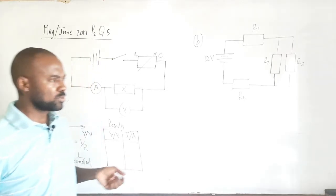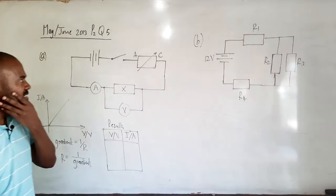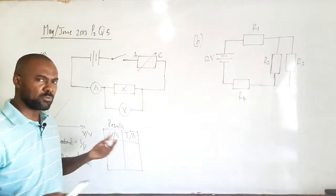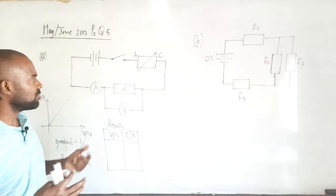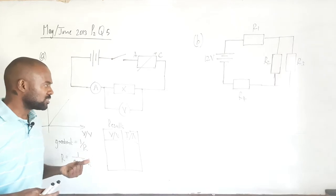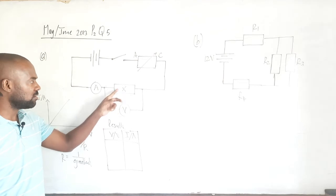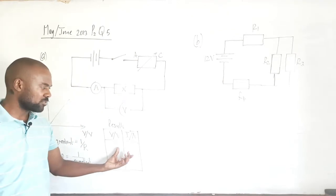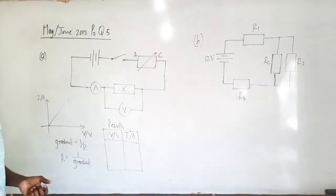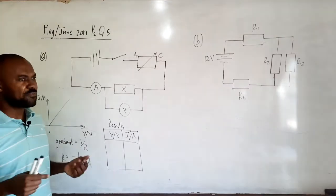To execute the experiment, we close our switch. We'd typically start with the variable resistor set to its maximum value to limit the current flowing in the circuit, then decrease the resistance and take a set of readings of current and voltage — the PD across the conductor and the current flowing through it. We'd tabulate our results until we have about eight sets of readings, and then plot a graph.